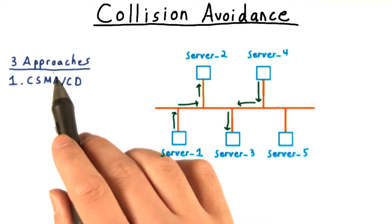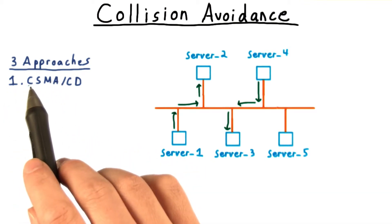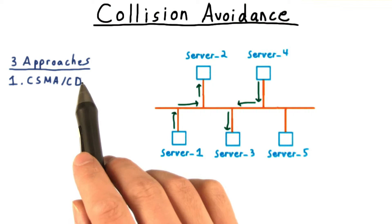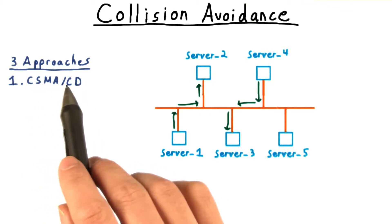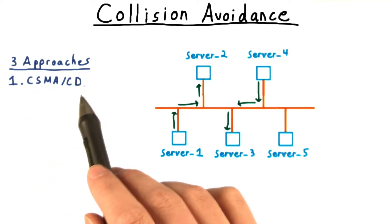We'll discuss three solutions to the collision problem. The first is carrier sense multiple access with collision detection, or CSMA/CD, which was used with early ethernet.